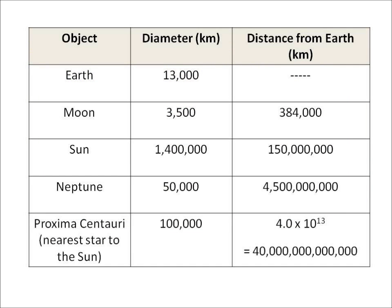You may also be required to compare the relative sizes of and the distances between the Earth, the Moon, the planets, the Sun, and so on. This table shows that the Moon is smaller than the Earth — it is 3,500 kilometers across, whereas the Earth is 13,000 kilometers across. We can also see that the Moon is quite close to the Earth: it is 384,000 kilometers away.